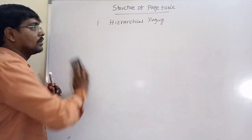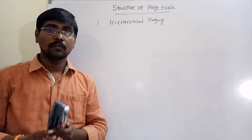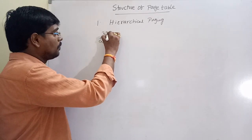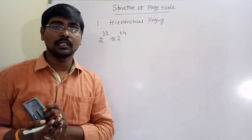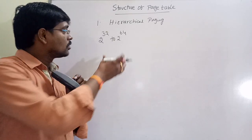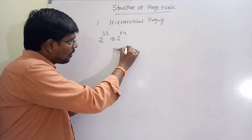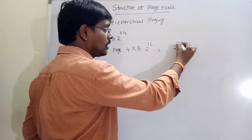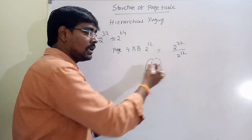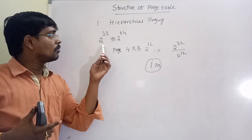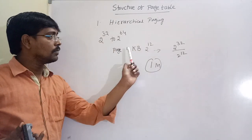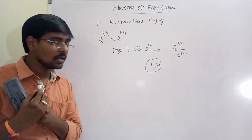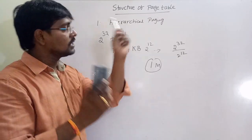First, we move to hierarchical paging. In modern computers, the size of the logical address space generally varies from 2 power 30 to 2 power 64. With a page size of 4KB, that is 2 power 12, dividing 2 power 32 by 2 power 12 gives approximately 1 million entries in the page table. It is very difficult to search for a particular frame in memory, so for that purpose we use the hierarchical concept — that is, we are paging the page table.